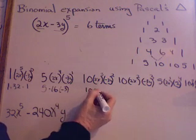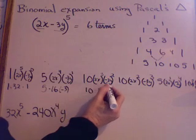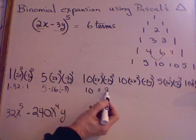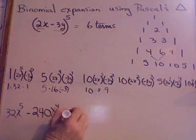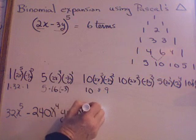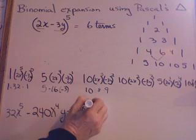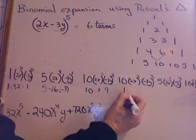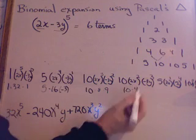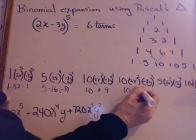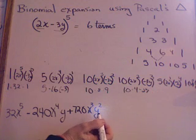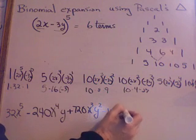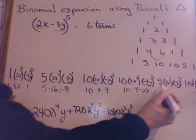Next term: I have a 10 times two to the third, which is 8, times negative three squared, which is positive 9. So 8 times 9 is 72, times 10 gives 720 — positive 720 x to the third, y to the second. Next term: 10 times two squared, which is 4, times negative three to the third, which is negative 27. Multiplying out gives negative 1080, x squared, y to the third.